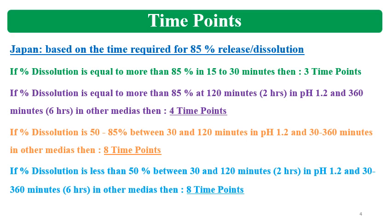If percent dissolution is equal to or more than 85% at 120 minutes (2 hours) in pH 1.2 media and 360 minutes (6 hours) in other media, then 4 time points will be required. If the dissolution is 50% to 85% between 30 minutes and 120 minutes in pH 1.2 and 30 minutes to 360 minutes in other medias, then 8 time points will be required. Similarly, if percent dissolution is less than 50% between 30 and 120 minutes in pH 1.2 and 30 to 360 minutes in other medias, then 8 time points will be required.